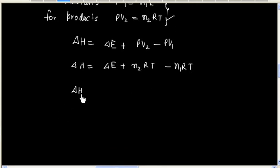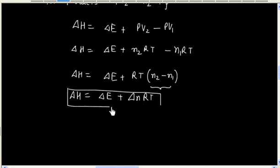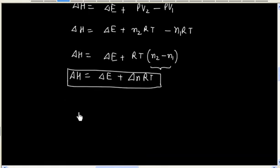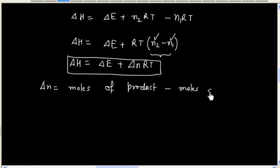So ΔH = ΔE + (N2 − N1)RT. Taking R and T common, this is ΔE + ΔN·R·T, where ΔN = N2 − N1, that is moles of product minus moles of reactant. This is sometimes also written as Np − Nr.